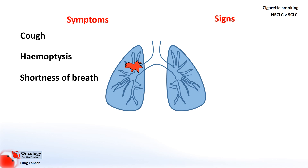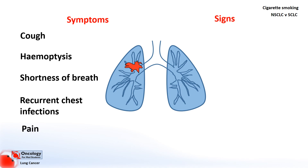Shortness of breath is likely to occur as a result of tumours blocking airways, making it more difficult to inhale the required amounts of oxygen. Recurrent infections might also occur if the tumour is stopping the lungs from being able to clear secretions easily, meaning secretions can stagnate and run the risk of becoming infected. Pain is another possible symptom, but it's not that common as the lung itself isn't able to sense pain — pain only really occurs when the tumour invades the chest wall where there are pain receptors.